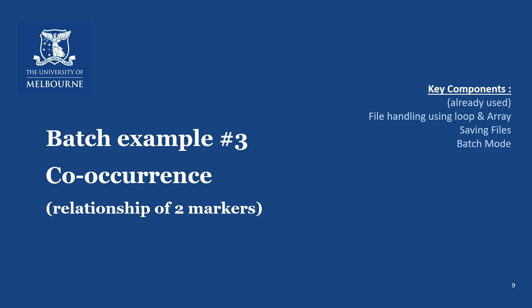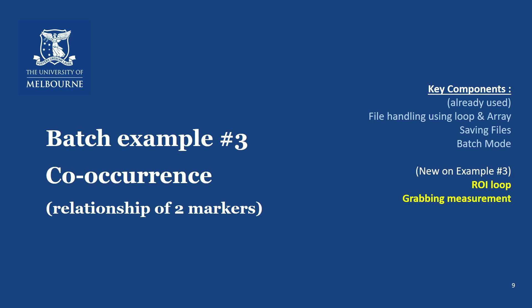In order to do this, we will need the components which we have used in the previous example, such as loop and array in batch mode. And also more components such as how to use the ROI manager and how to loop ROIs. And also how to grab measurements from the ROI. We will also learn how to log data onto our custom data table.